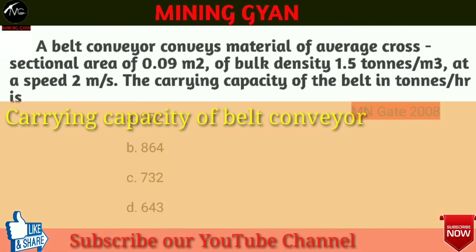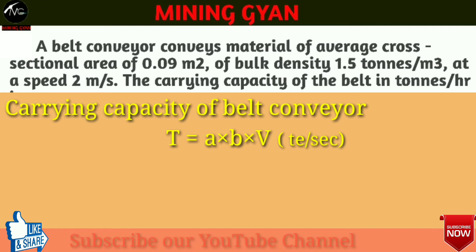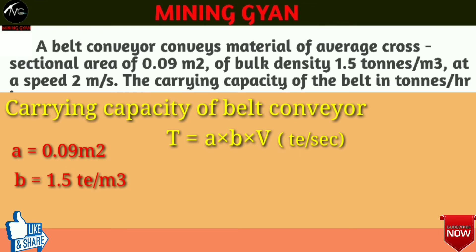Formula: carrying capacity of belt conveyor is equal to A multiplied by B multiplied by V ton per second। जहां A = average cross sectional area of material = 0.09 m², B = bulk density of material = 1.5 ton/m³, और V = speed of conveyor belt = 2 meter per second।